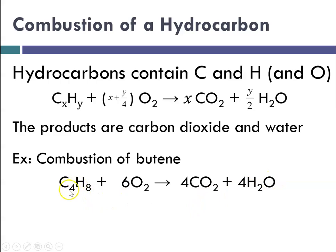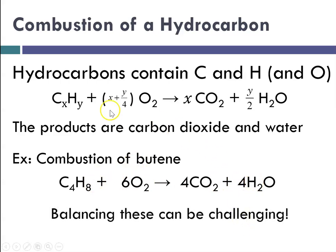This 4 comes over here and is the 4 in front of carbon dioxide. That's my X. And then this 6 is 4 plus 8 divided by 4. 8 divided by 4 is 2. 4 plus 2 is 6. That's where that comes from. And then for water, the coefficient is Y divided by 2. And 8 divided by 2 is 4. So again, balancing these can be challenging. You don't have to use this formula if you don't want to, but you'll find that it is super, super helpful.